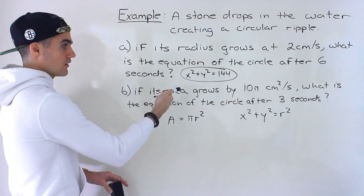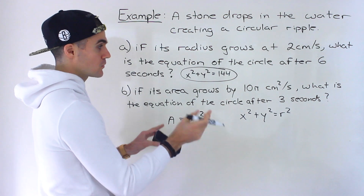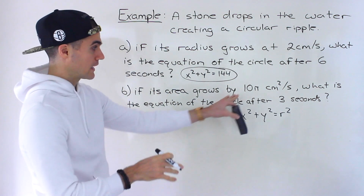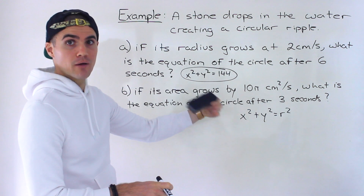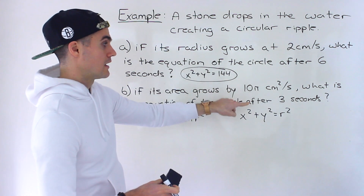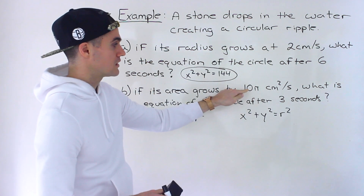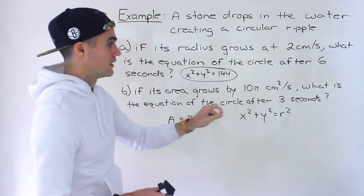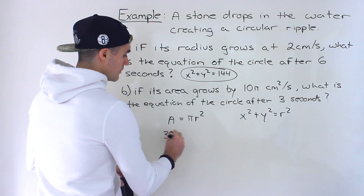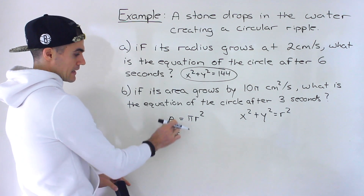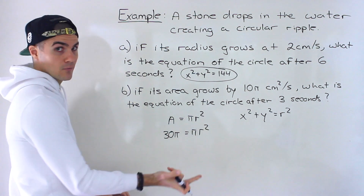If the area grows by 10π centimeters squared per second, what is the equation of the circle after three seconds? First, find the area after three seconds: at two seconds it's 10π + 10π = 20π, and at three seconds it's 30π. Or simply multiply 10π by three to get 30π centimeters squared. So we set the area formula equal to 30π: 30π = πr².